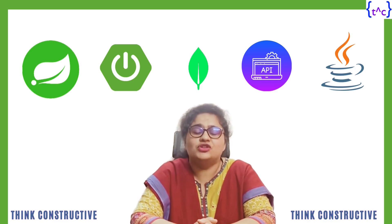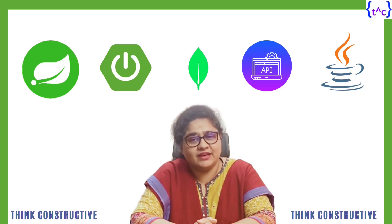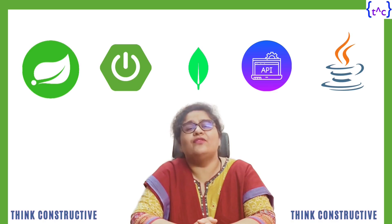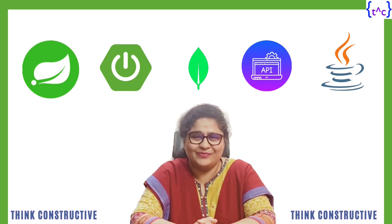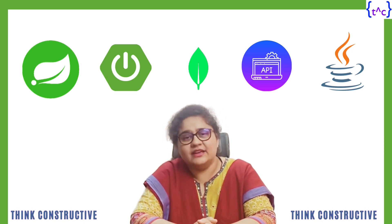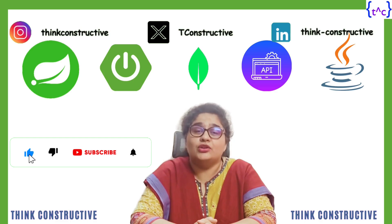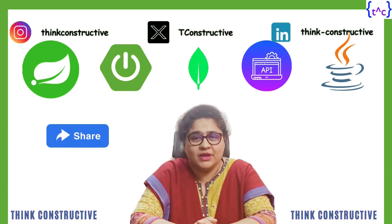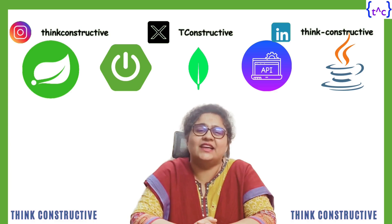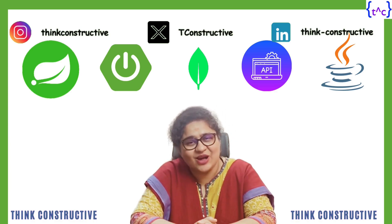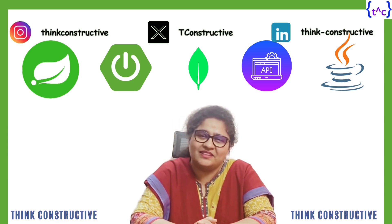To summarize this session: we applied specific roles to individual users, enabled REST APIs for those particular roles, enabled method-level authorization using Spring Security with @EnableMethodSecurity, and tested our REST APIs using Postman. In the next session, I will cover how to store user credentials in the database and how to authenticate and authorize a Spring Boot application using Spring Security via UserDetails and UserDetailsService. Please share the channel with friends, family, and colleagues. See you in the next session!